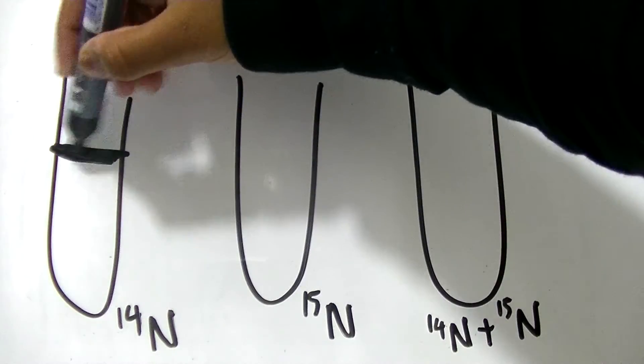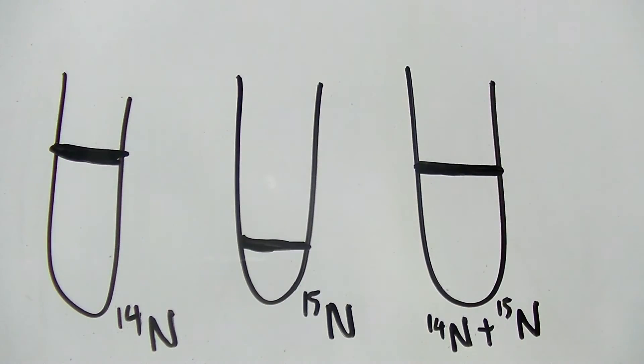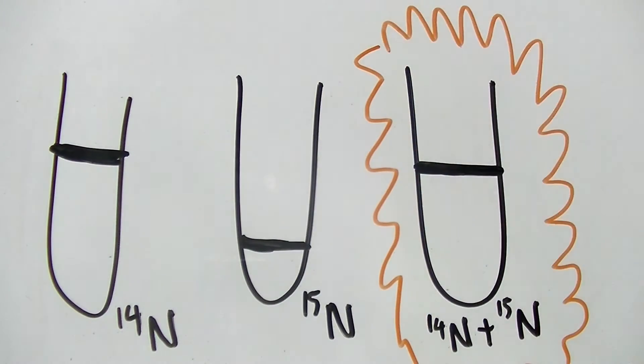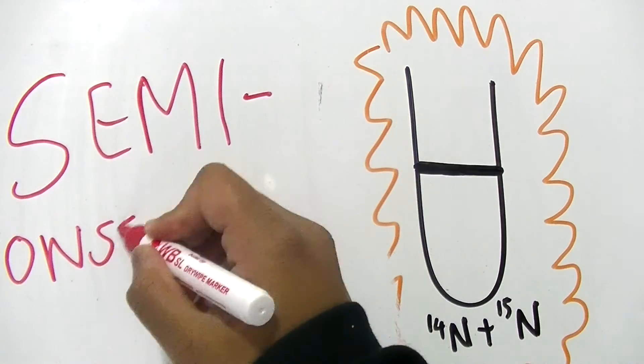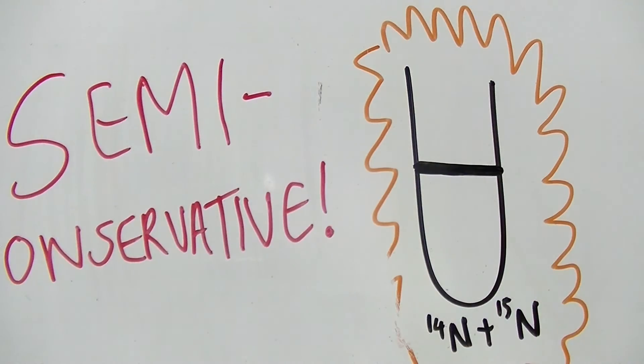The sample with both samples of nitrogen settled in the middle. This suggested that the replication was semi-conservative and the sample consisted of both heavy and light nitrogen.